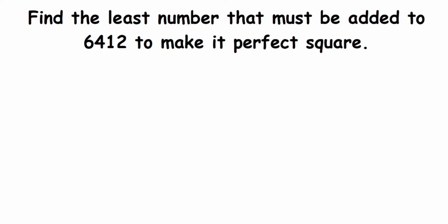Hey everyone, here is a question on square and square root. The question is: find the least number that must be added to 6412 to make it perfect square. This means 6412 is not a perfect square. We need to add the smallest number or the least number to make this number a perfect square.